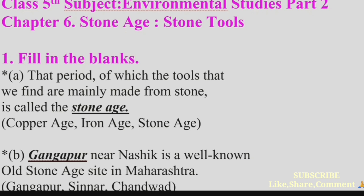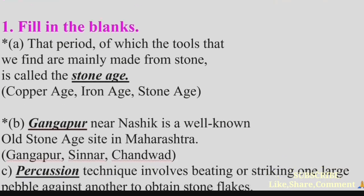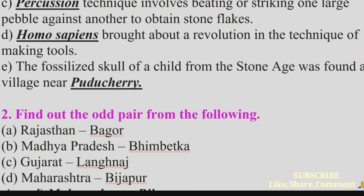Question 1: Fill in the blanks. (a) That period in which the tools we find are mainly made from stone is called the — Answer: Stone Age. (b) — near Nashik is a well-known Old Stone Age site in Maharashtra. Answer: Gangapore. (c) The — technique involves beating or striking one large pebble against another to obtain stone flakes.